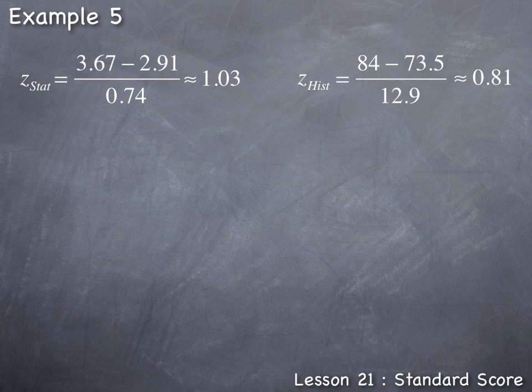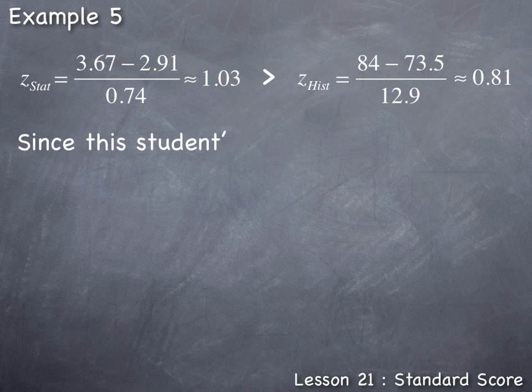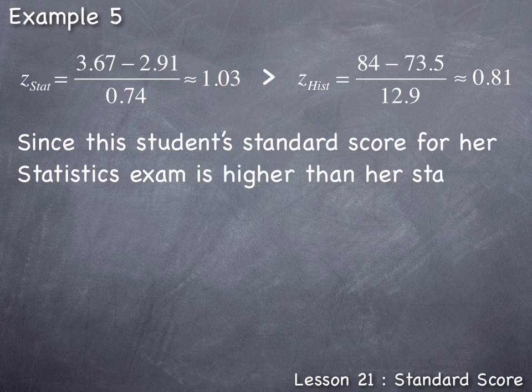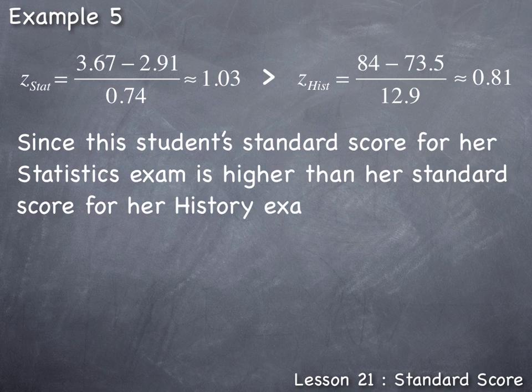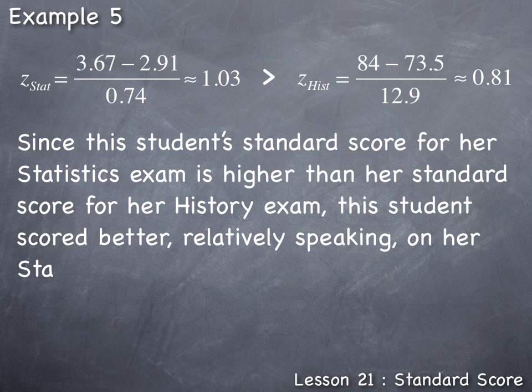Now we can compare the standard score in statistics to the standard score in history. The standard score in statistics was 1.03, which is greater than her standard score in history, which was 0.81. Since this student's standard score for the statistics exam is higher than her standard score for the history exam, this student scored better, relatively speaking, on her statistics exam.